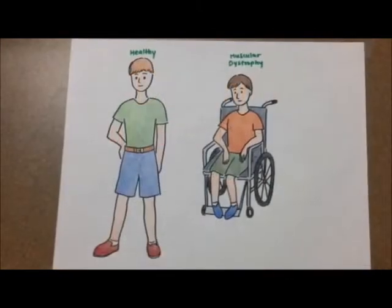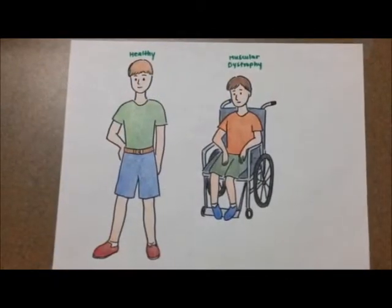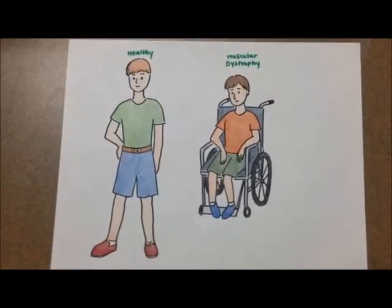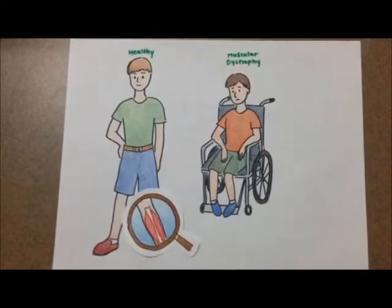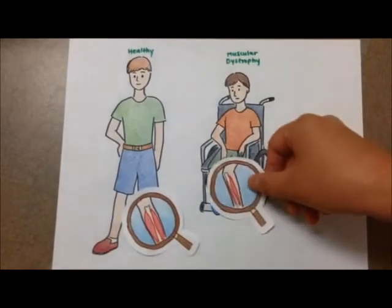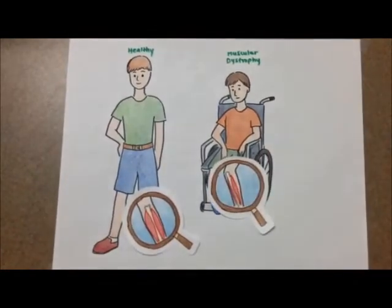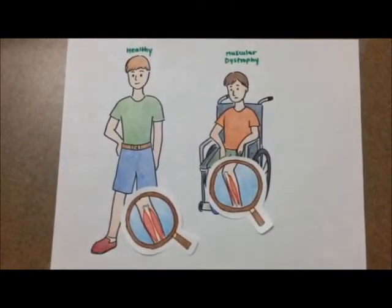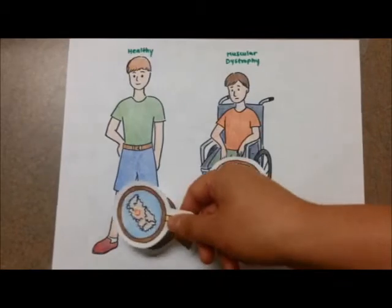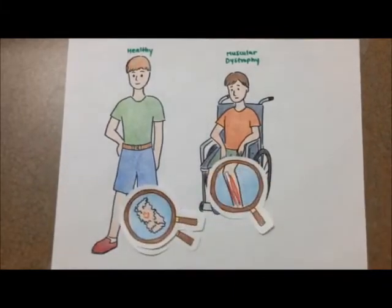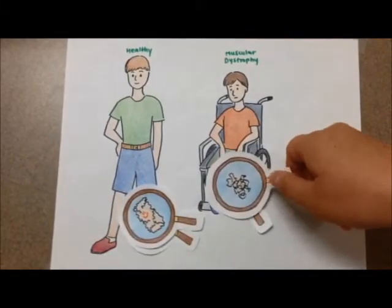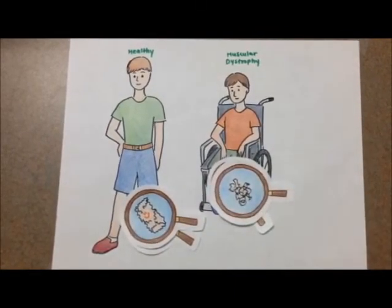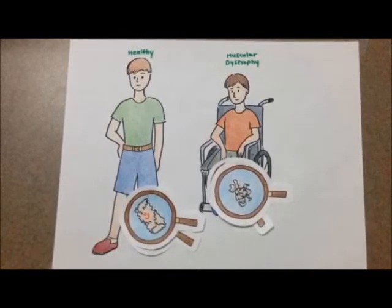Muscle dystrophy is a condition in which patients experience progressive loss of muscle function and weakness, which begins in the lower limbs. Mutation in the Duchenne gene causes a lack of function in dystrophin, which leads to muscle dystrophy. Incidences of muscle dystrophy occur primarily in young males.